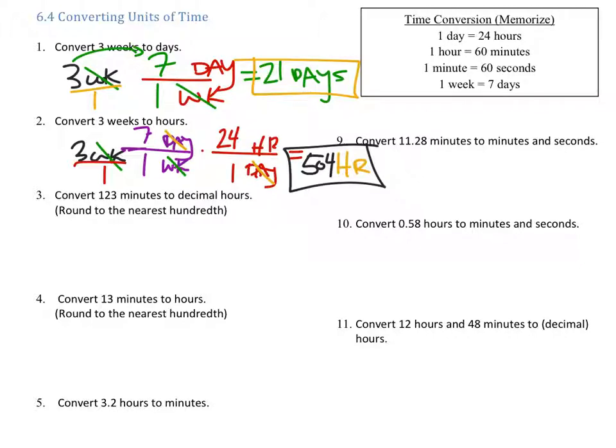11.28 minutes to minutes and seconds. Yeah, this is a good one. Now this one kind of goes back to that pounds and ounces one, if I remember right. We already have 11 minutes right there. Okay, so we know it's 11 minutes. We just got to figure out how many seconds 0.28 minutes is. So 0.28 minutes. I'm going to convert this to seconds. So I'm going to have to divide that by minutes so that my minutes cancel out. And there's 60 seconds for every one minute. So I got 0.28 times the 60, which leaves me with 16.8 seconds because my minutes canceled out.